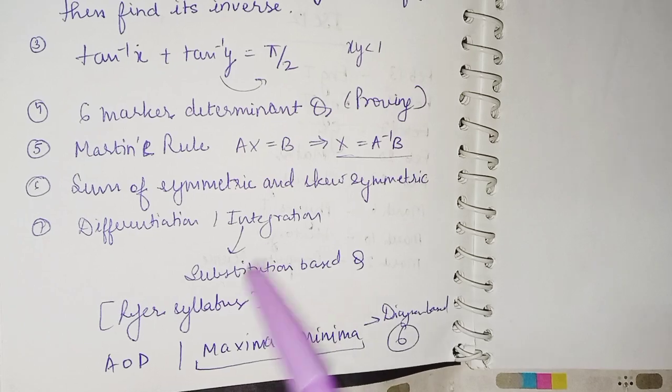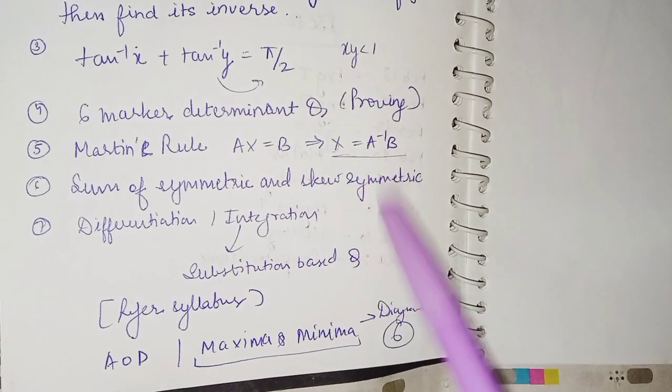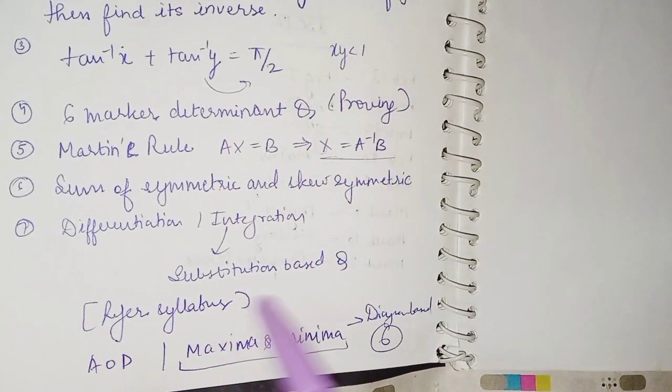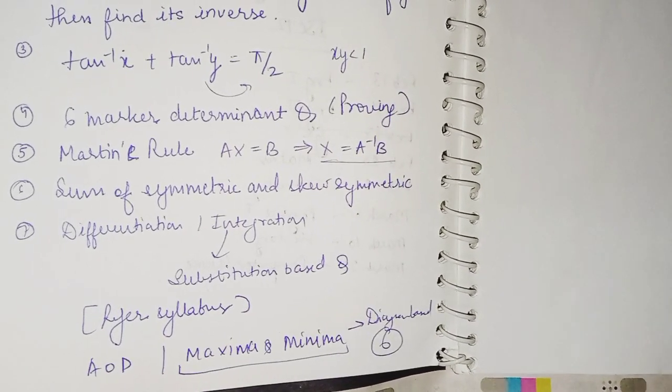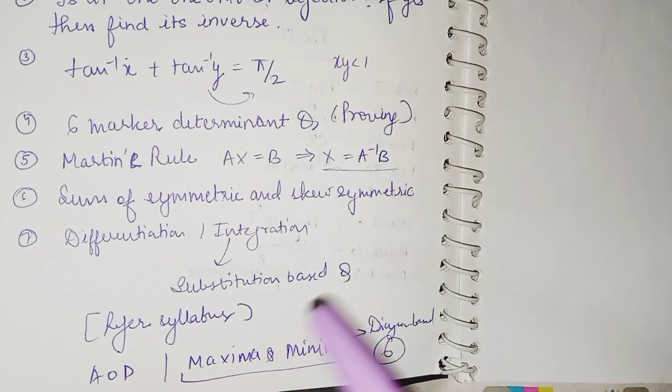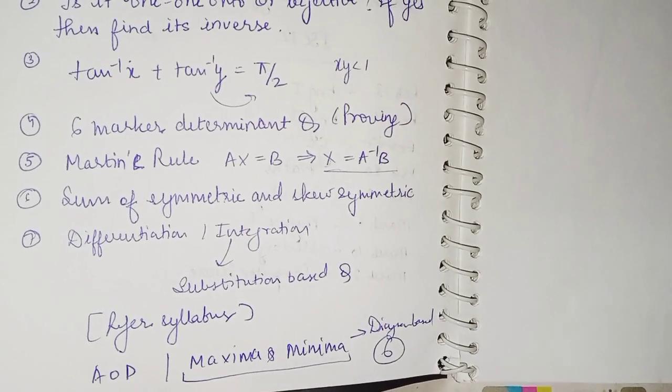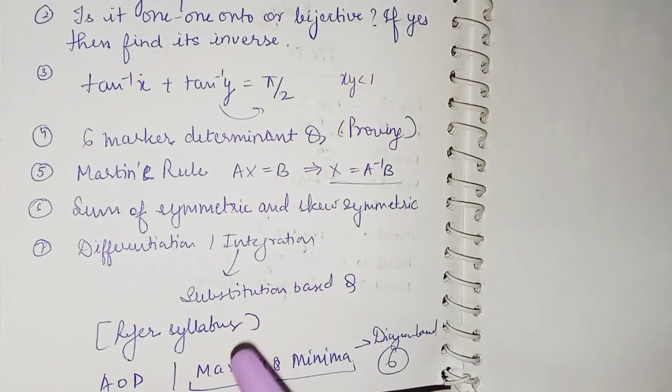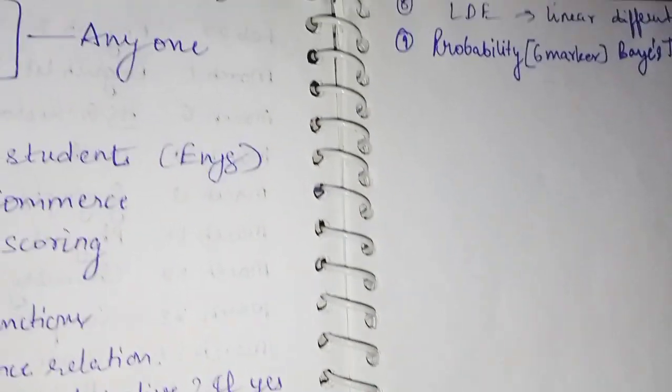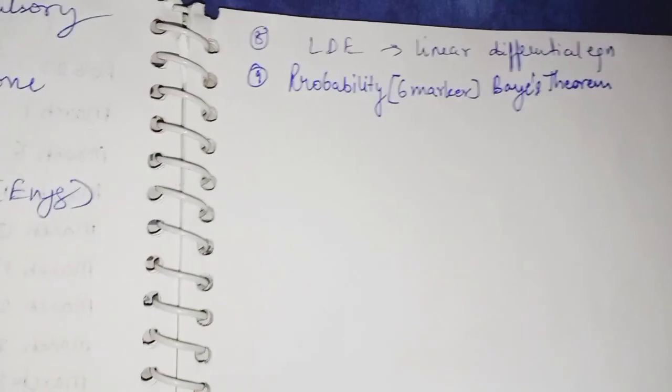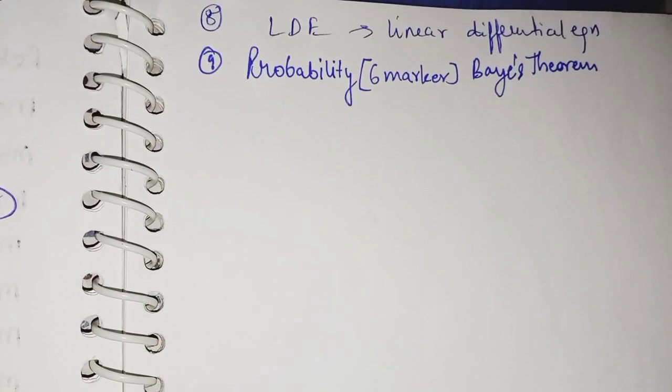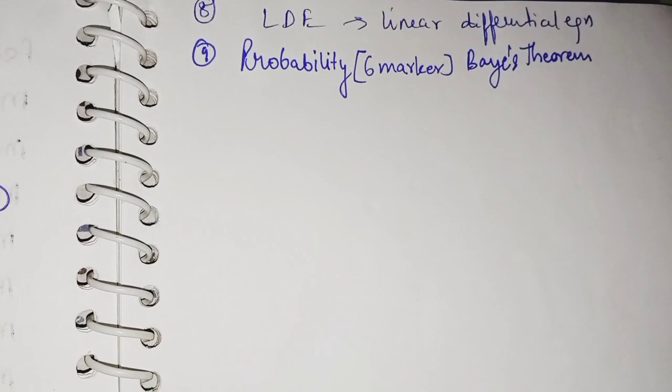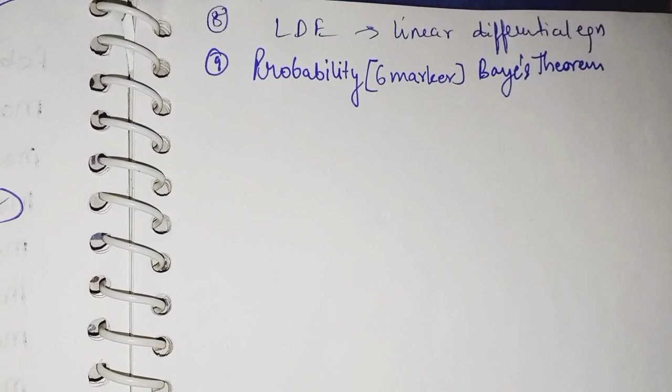Refer to the syllabus like there are types of dx by under root of a square minus x square and so on. Maxima and minima, six marker diagram-based question is asked. Draw the diagram with the help of pencil, do not make it with a pen. Label everything and then solve it accordingly. You have to make that equation. Then we have LDE, that is the type of differential equation that is asked every year. It's not important that this will be asked. They may ask you homogeneous equation and so on. You have to identify it. It is based on your practice again.